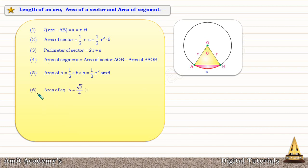Now, the sixth formula is that the area of equilateral triangle is root 3 upon 4 side square. The formula is root 3 by 4 side square.